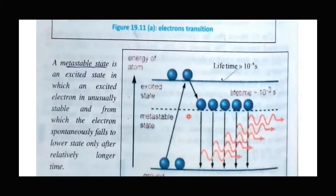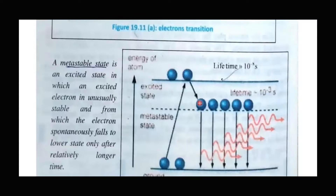When we have a population-inverted state and external photons strike the metastable-state electrons, stimulated emission occurs. The first photon triggers two-photon emission, those two photons each trigger further emissions, and in this way the number of photons increases continuously. This chain reaction is how laser light is produced — starting from population inversion and a triggering external photon.